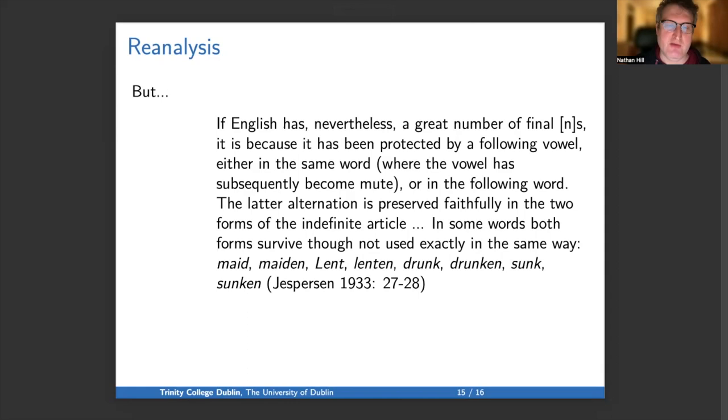Jespersen says, if English has, nevertheless, a great number of final ends, it is because it has been protected by a following vowel, either in the same word, where the vowel has subsequently become mute, or in the following word. The later alternation is preserved faithfully in the two forms of the indefinite article. In some words, both forms survive, though not used exactly in the same way. Made, maiden; lent, lenten; drunk, drunken; sunk, sunken.